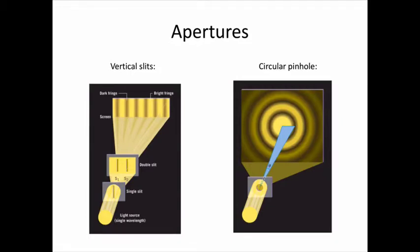In case you're wondering why some of the interference patterns you've seen are straight lines and some are concentric circles, it depends on the shape of the aperture you're using. For long, thin slits cut in a card, the pattern is a line of fringes.